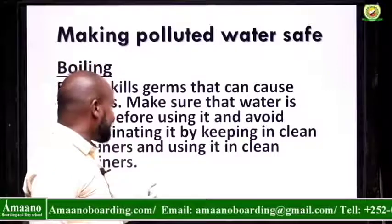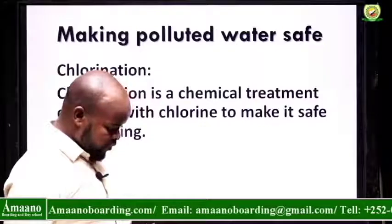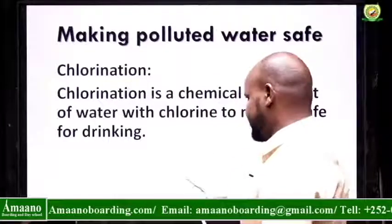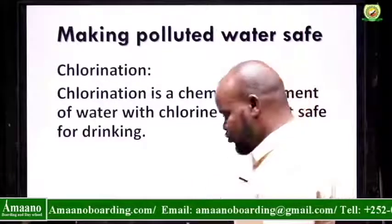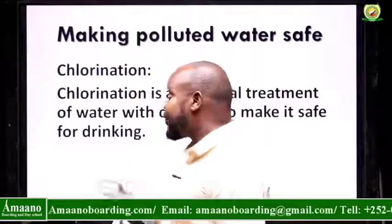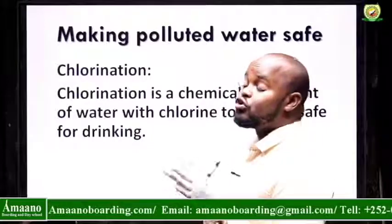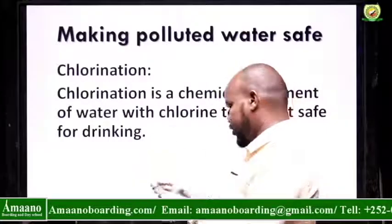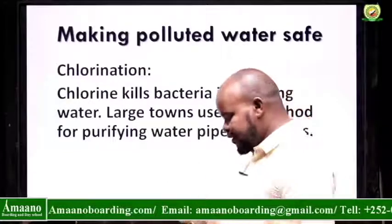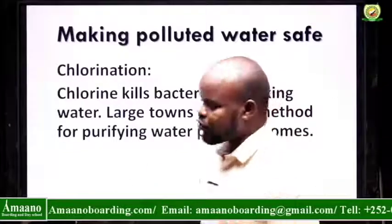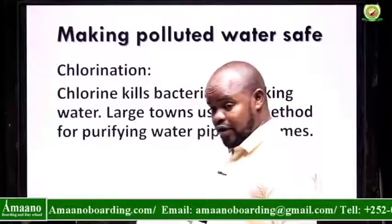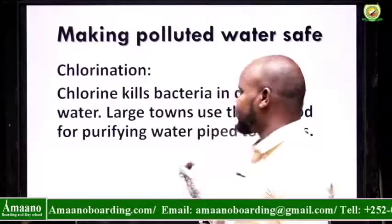Now let's look at the second method: chlorination. Chlorination is a chemical treatment of water with chlorine to make it safe for drinking. In boiling you don't add anything — you just put the vessel on fire and boil it. But in chlorination you add certain chemicals to treat the polluted water. Chlorine kills bacteria in drinking water, and in most contaminated water the contaminant is bacteria.